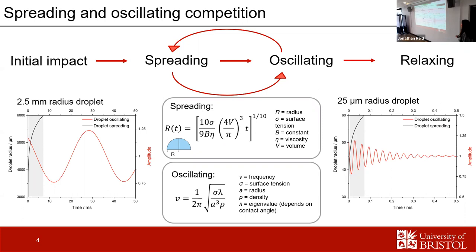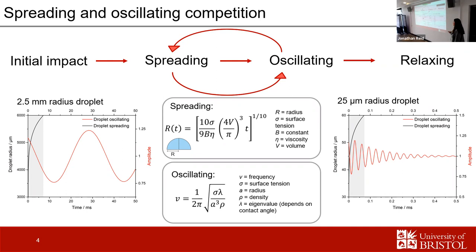Looking at these two models: for the 2.5 millimeter radius droplet, the time it takes for the droplet to double in radius is on a much faster timescale than the oscillation, so we can think of spreading and oscillating as happening consecutively. Whereas for the smaller picoliter size, the time to double in size is on the same timescale as the oscillation. I first noticed this when taking a video of a water droplet on a glass slide — I was naively expecting clean oscillations but saw spreading interference, which led me to look more into the spreading dynamics.